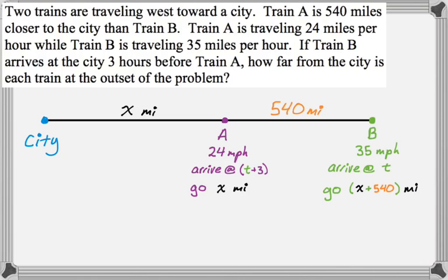And from this, I now have, if you look at it for each of them, we know the distance it goes. We know the rate that it goes. And we know the time that it takes to do that. So that's distance equals rate times time. So I can now write two equations. So X equals 24 times T plus 3. That's distance equals rate times time. And then I also know that X plus 540 equals 35 times T.